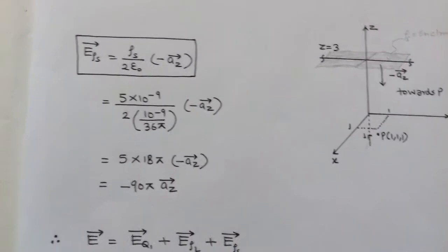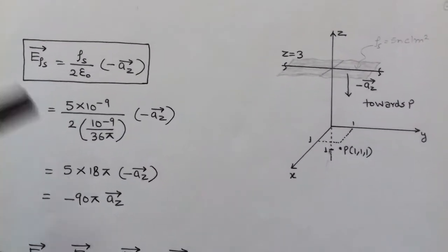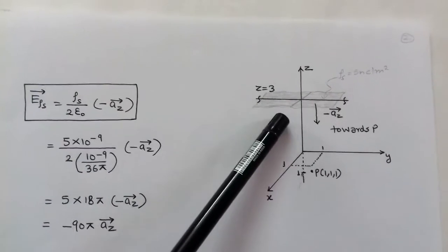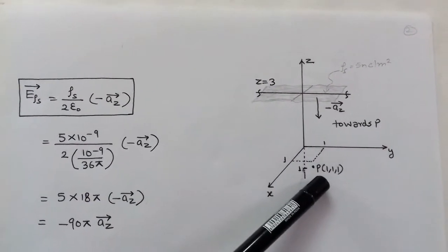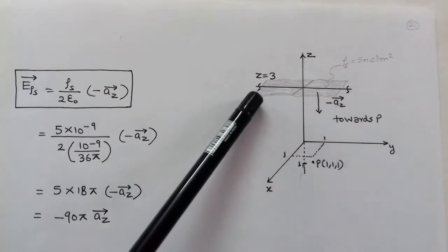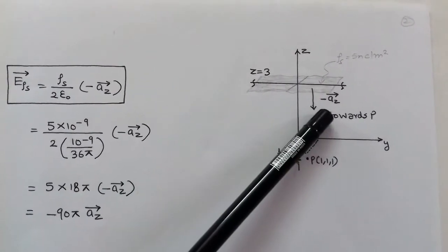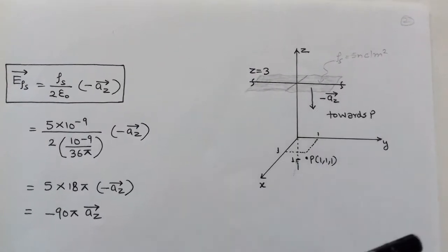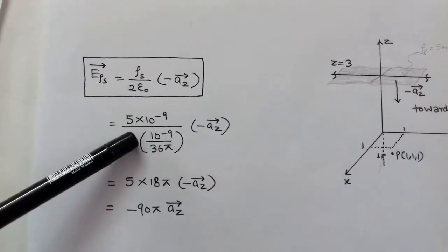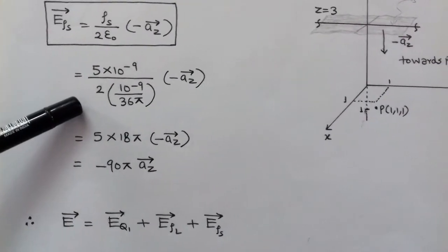The third case is the electric field due to surface charge density ρs. The formula is ρs upon 2ε₀ times unit vector n, where n is the normal unit vector. From the figure, the direction from the surface at z = 3 toward point P is the negative z direction, so we replace n̂ with −ẑ. Substituting ε₀ = 10⁻⁹/36π and ρs = 5 × 10⁻⁹ gives −90π ẑ V/m, approximately −282.7 ẑ.